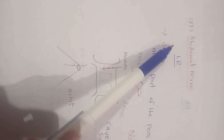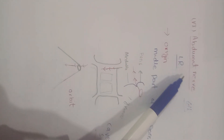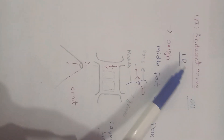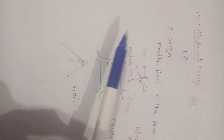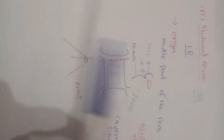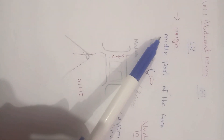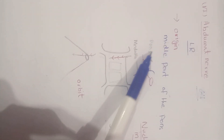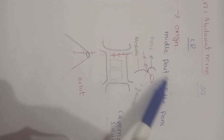The sixth cranial nerve is the abducens nerve, which supplies the lateral rectus of the eyeball. Its nucleus originates in the middle part of the pons.